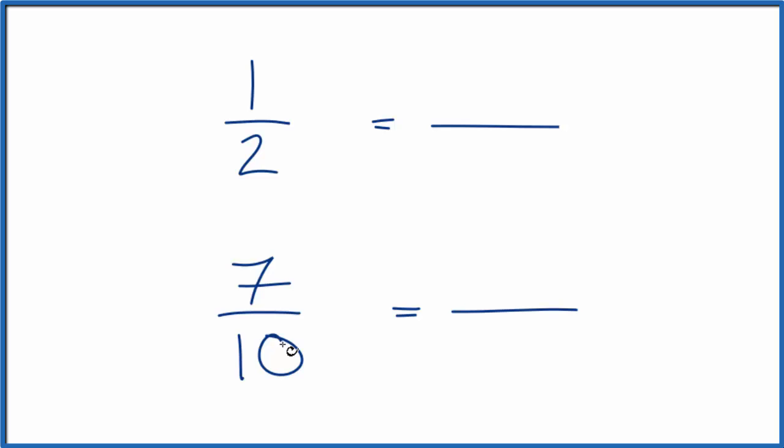So 2 goes into 10 five times. 2 times 5, that would give me 10, and then I have 7 tenths here, so I could compare those. But since I multiply the bottom by 5, I need to multiply the top by 5 here as well. So this just equals 1. I haven't really changed anything, just have it in a different form.